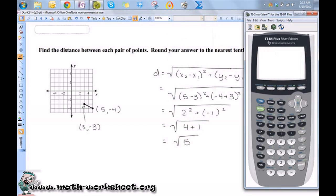Now if you want to know what that is as a rounded answer, the square root of 5 is approximately equal to 2.2.